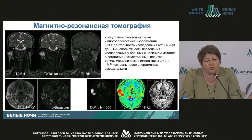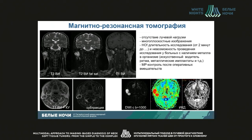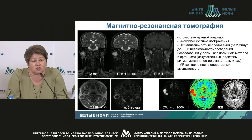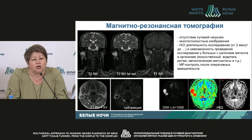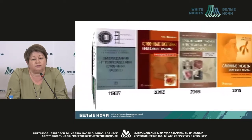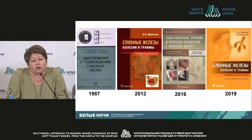We are now using more frequently the highly technological method: MRI. It allows seeing several planes. However, there is a big disadvantage — it's a long investigation, and it's impossible to do on patients with metal implants, for example, metal pacers, pacemakers, and metal implants.